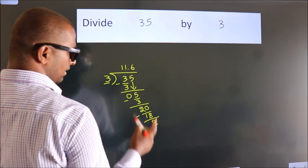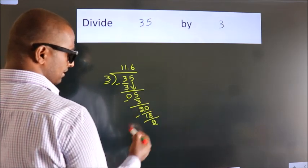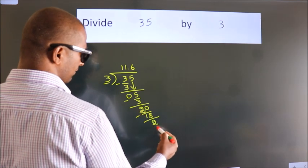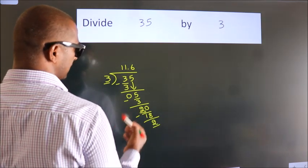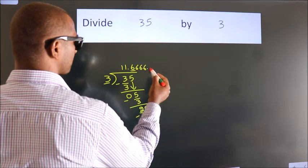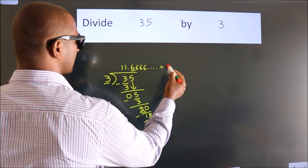We get 2. Now observe: we had 2 here and we got 2 again. That means this number keeps repeating. So this is our quotient.